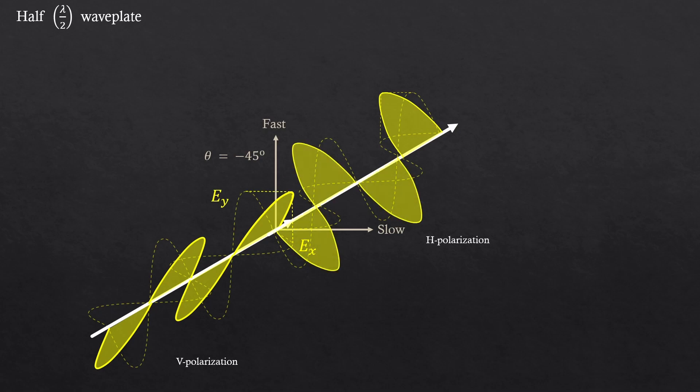Again, we are looking at this with our head 45 degrees tilted. So this is how the half wave plate changes polarizations.